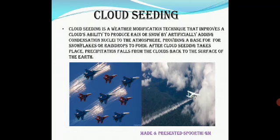In addition to bringing rain artificially, the technology can also be used to bring snow, as well as reduce fog and hail formation. So cloud seeding can be used for four different purposes: to induce rain formation, to induce snow formation, to reduce foggy conditions, and to reduce hail formation over a particular region.